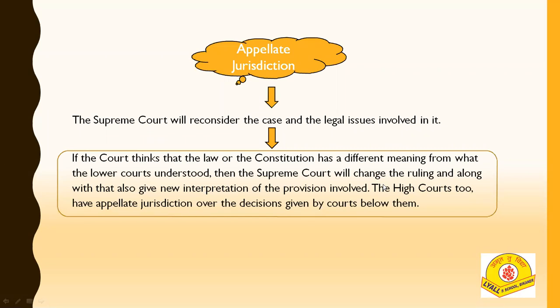In many cases you can see that the Supreme Court first gives one decision, but after some dates or hearings they change their judgment. This is because the judges of the Supreme Court are also human. If they find an error, they will reconsider the case according to the Constitution and according to law — whether the case was understood from the wrong direction.